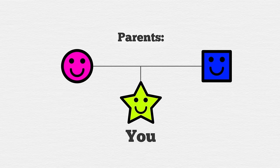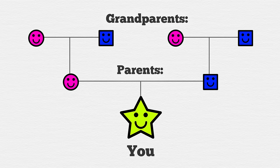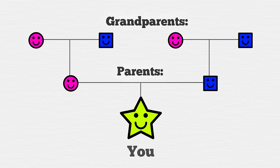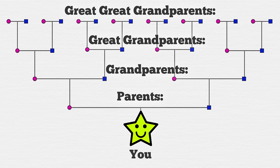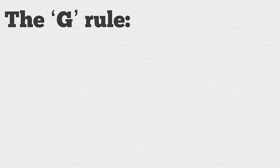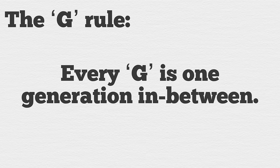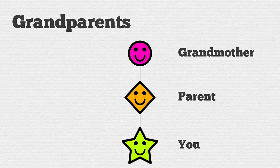You have parents, and your parents have parents. These are your grandparents, who also have parents — your great-grandparents. Keep adding parents, keep adding greats. For every G in the name, there is one generation in between you and that person.